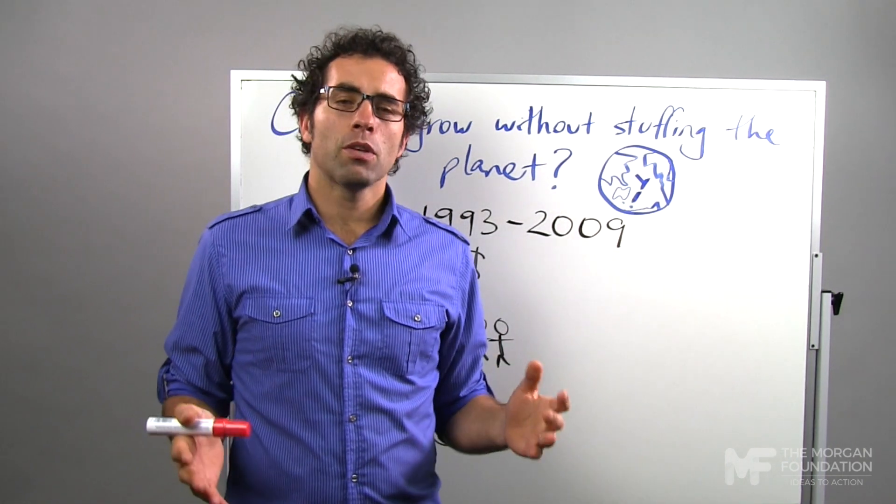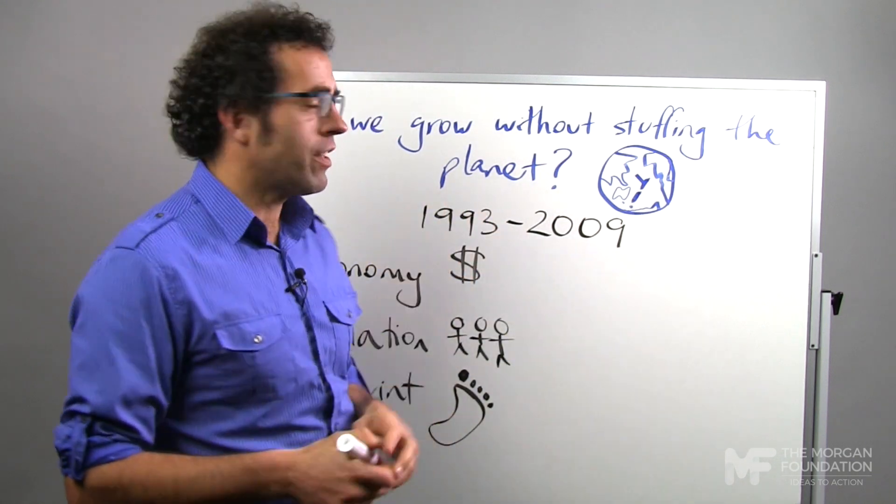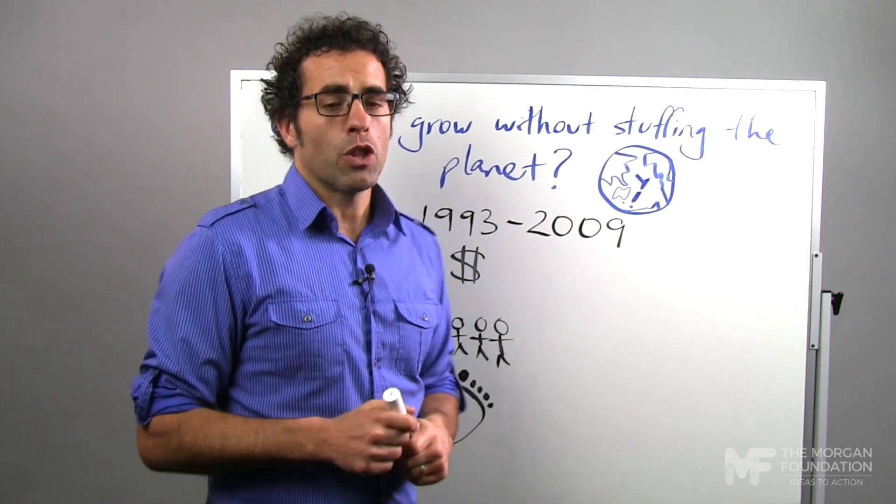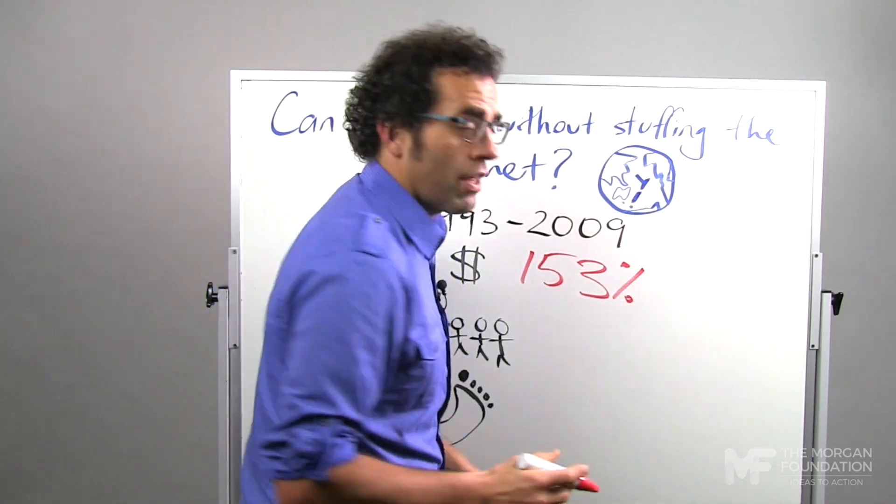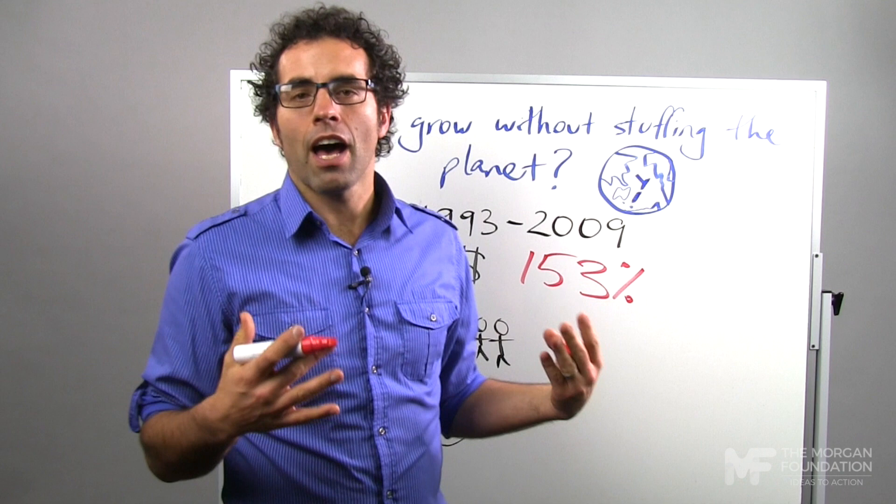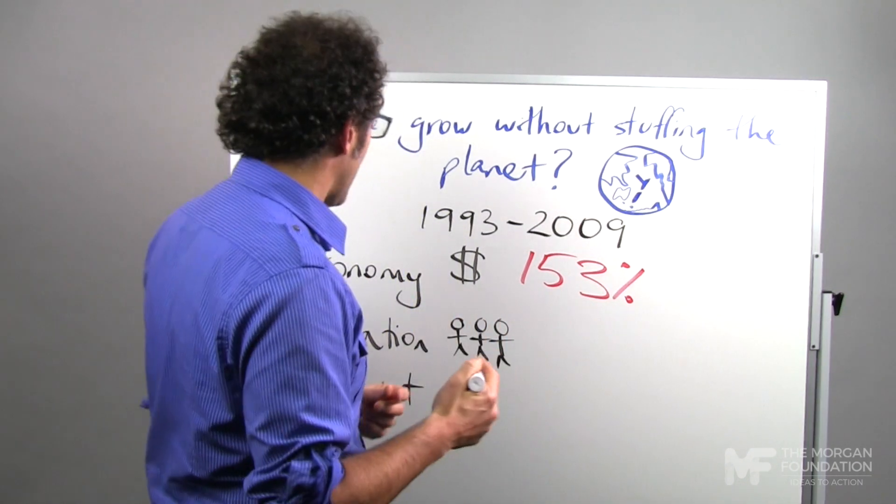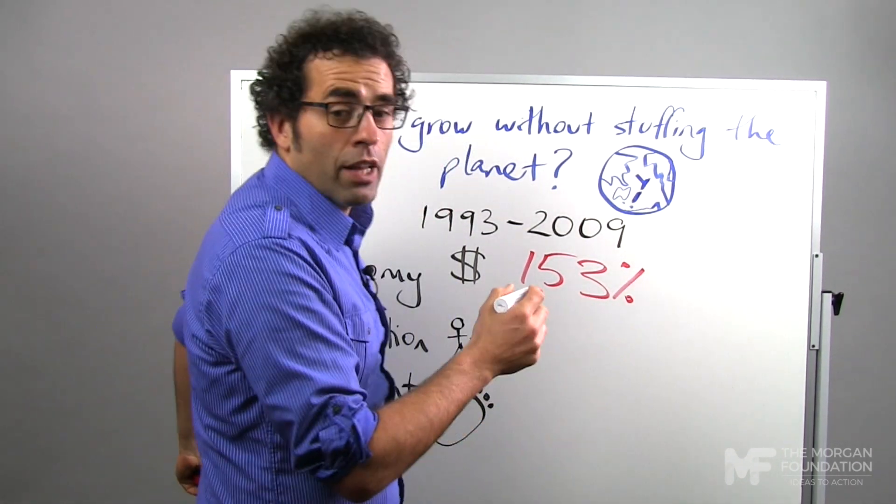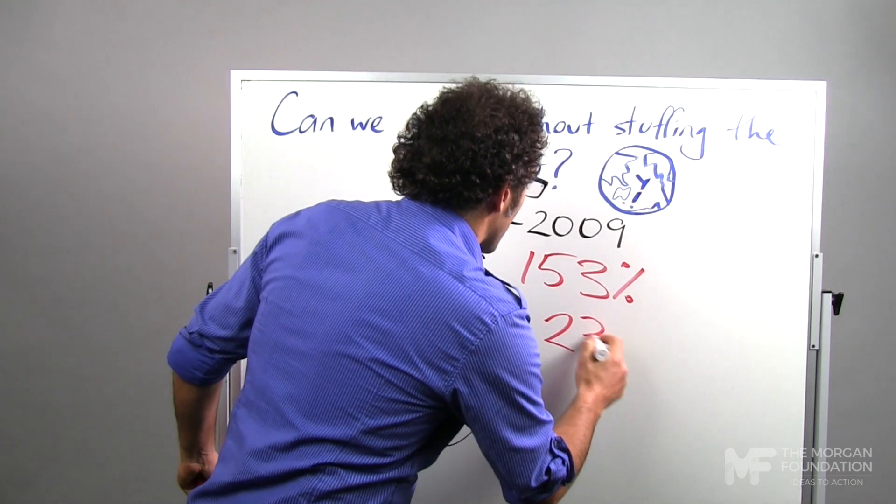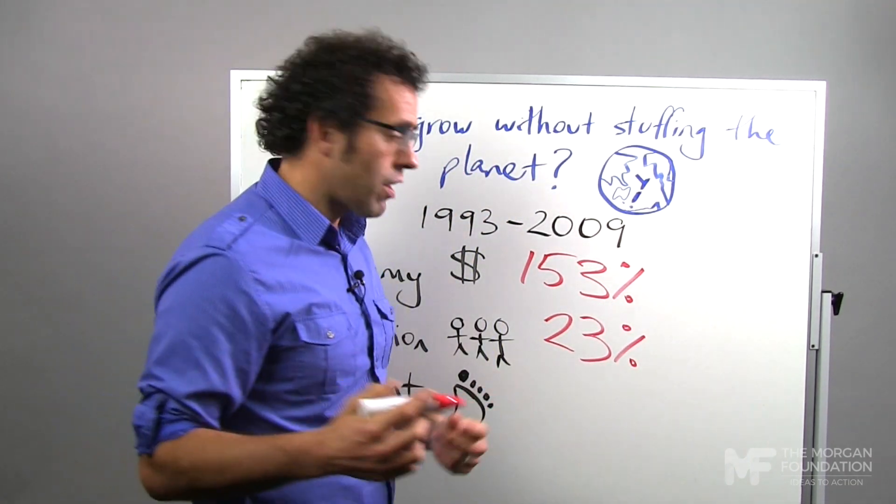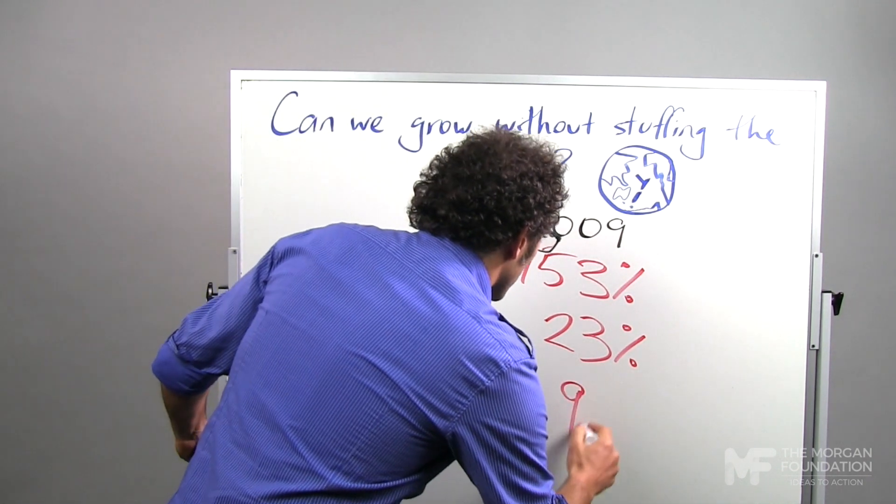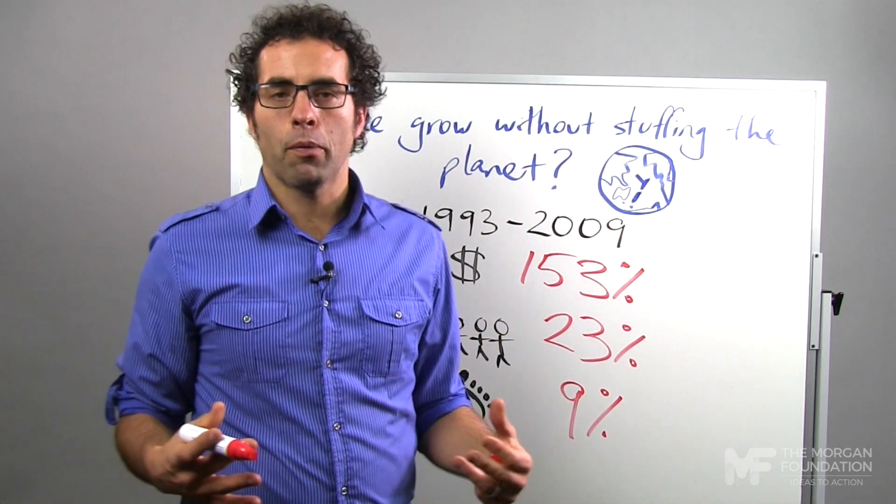This study talks about how between 1993 and 2009, the world economy grew by 153 percent, so that's grown by one and a half times over that period. Population has increased by around 23 percent, so that is starting to slow.